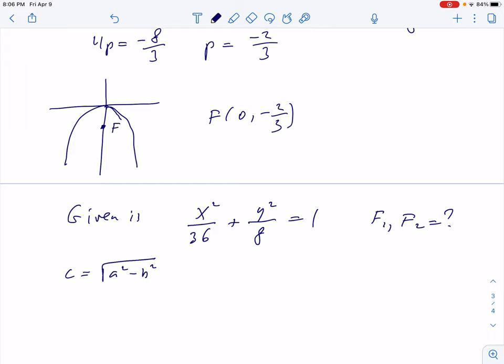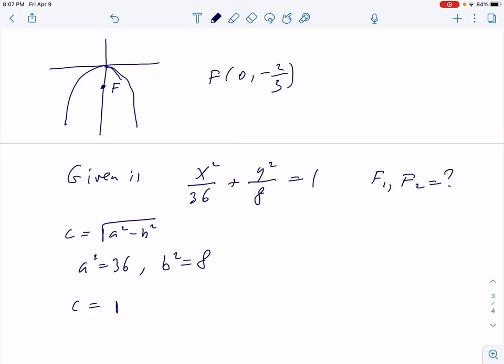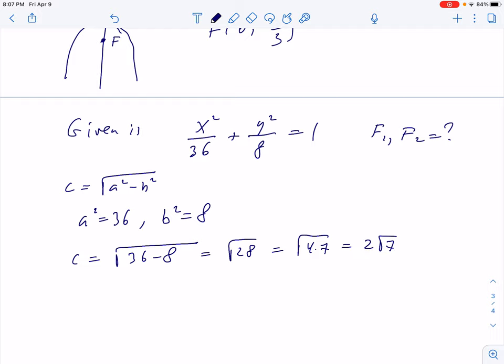Now remember how we find the coordinate c. This is square root a squared minus b squared. In our case, a squared is 36, b squared is 8. So we have c equals square root 36 minus 8, which will be square root 28, which we can write 4 times 7. And this will be 2 times the root of 7. So the two foci have coordinates: f1 is in the place 2 root of 7, 0.